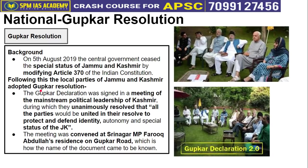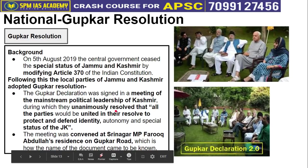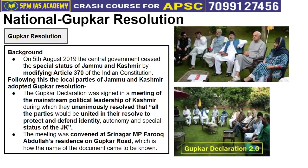The simple objective of the Gupkar Resolution was to restore Jammu and Kashmir's special status. The Gupkar Resolution was signed in a meeting of mainstream political parties of Kashmir, which unanimously resolved that all parties would be united to protect, defend, and restore the identity, autonomy, and special status of Jammu and Kashmir. It is called the Gupkar Resolution because the first meeting was held at the residence of Farooq Abdullah, former Chief Minister, located on Gupkar Road in Kashmir.